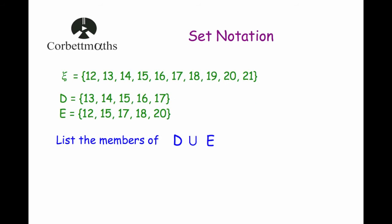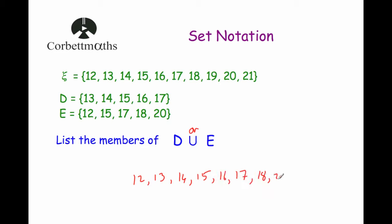Our next question has universal set = {12, 13, 14, 15, 16, 17, 18, 19, 20, 21}, set D = {13, 14, 15, 16, 17} and set E = {12, 15, 17, 18, 20}. The question says write down the members of D union E — so in D or E. Listing out all numbers in either set: {12, 13, 14, 15, 16, 17, 18, 20}.